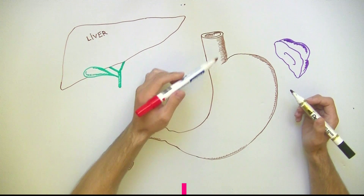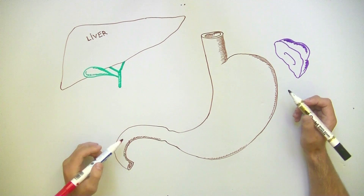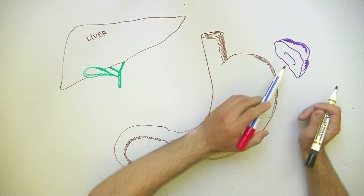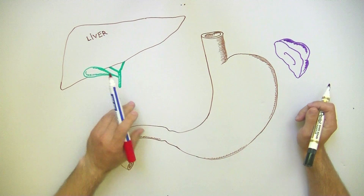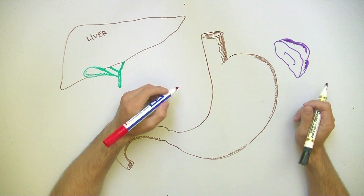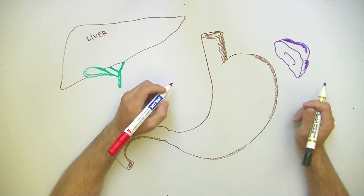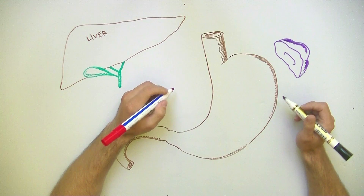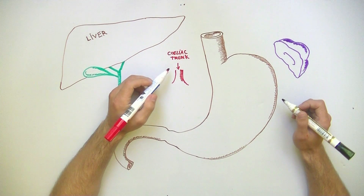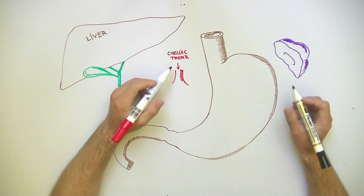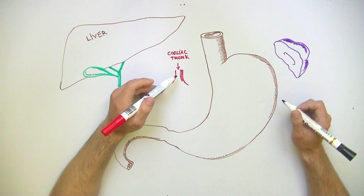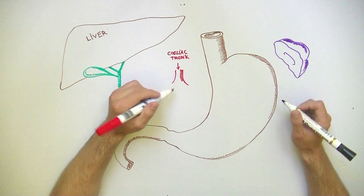As you can see, I've indicated here the stomach, the first and second part of duodenum, the spleen, the liver and the gallbladder. The celiac trunk is only about one centimeter long and springs from the aorta between the right and left cura of the diaphragm. It has three branches: the left gastric artery, the splenic artery and the common hepatic artery.